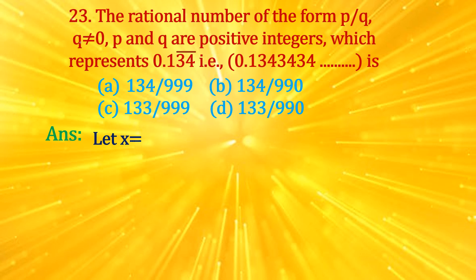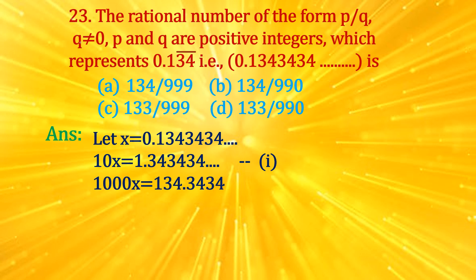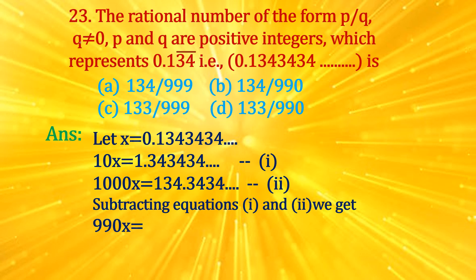Let x = 0.1343434... Then 10x = 1.343434... and 1000x = 134.3434... Subtracting equations, we get 990x = 133. So x = 133/990. Thus, d is the correct option.